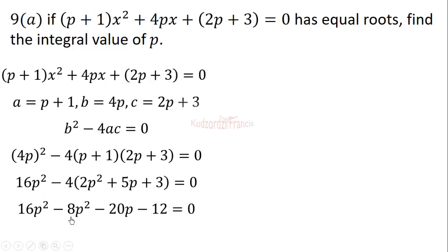Simplifying the quadratic terms, we get 8p² - 20p - 12 = 0. We can reduce by dividing by 4 to get 2p² - 5p - 3 = 0.